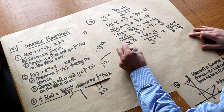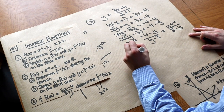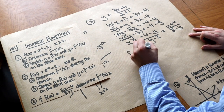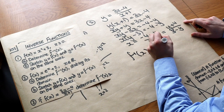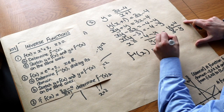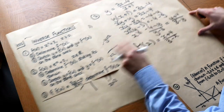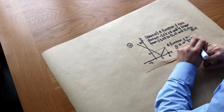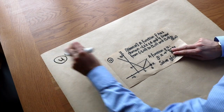Dividing by the bracket gives x = (−4 − y) / (y − 3). We can tidy this up by multiplying top and bottom by −1, giving x = (y + 4) / (3 − y). So the inverse function is f⁻¹(x) = (x + 4) / (3 − x).